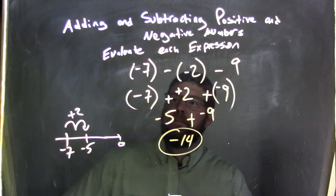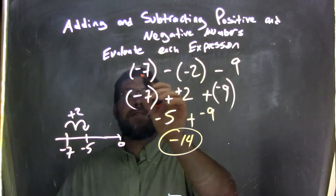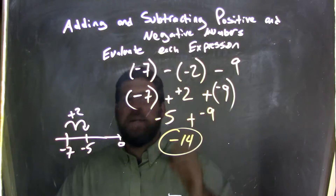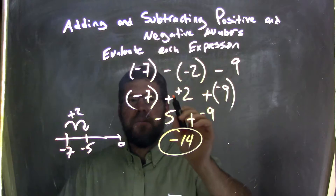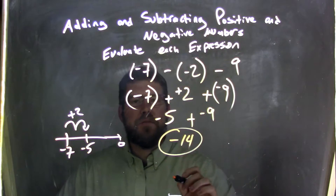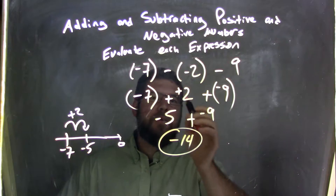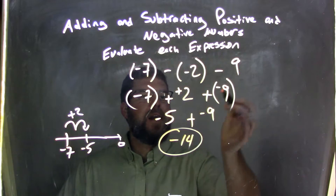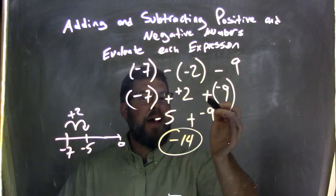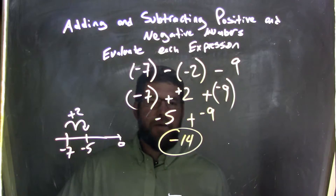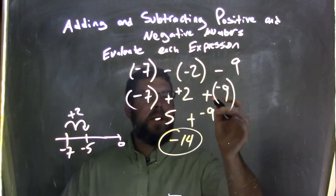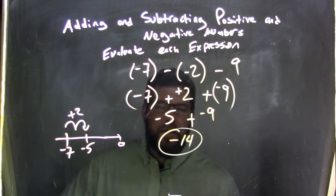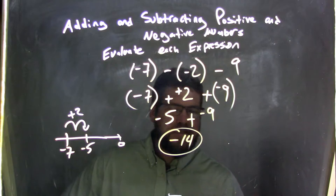So let's recap here. We started with negative 7 minus a negative 2 minus 9. Minus a negative 2 is the same thing as adding a positive. So we had negative 7 plus a positive 2. And then minus a 9 is the same thing as adding a negative 9. They come in pairs — two lines.